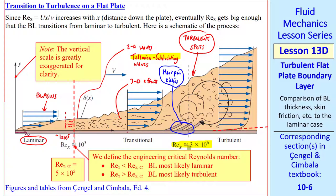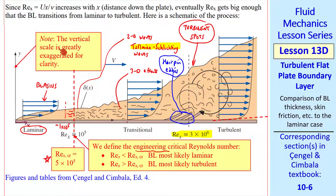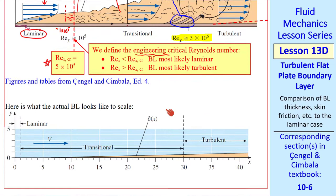These numbers are ballpark numbers, but we almost always have fully developed turbulent flow beyond about a Reynolds number of 3 million. For engineering purposes, we define a critical Reynolds number, below which the boundary layer is most likely laminar, and above which it's most likely turbulent. This critical Reynolds number is around 5 times 10 to the 5th. That's what we'll use in this course to determine whether the boundary layer is laminar or turbulent. I note here that the vertical scale is greatly exaggerated for clarity.